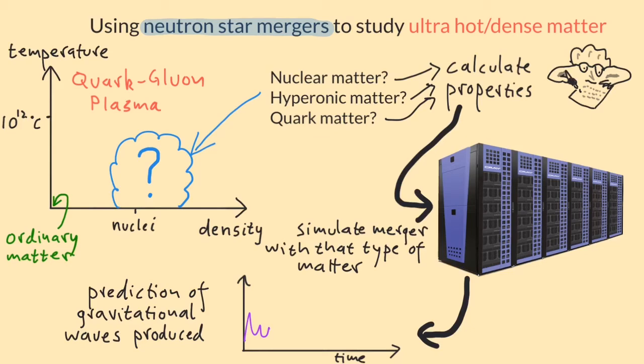If we do all that, assuming that the merger creates hot nuclear matter, and that disagrees with what they see, then matter at those temperatures and densities isn't nuclear matter, and we need to explore one of the other ideas like hyperonic matter. Calculate its properties, do a simulation assuming that's what's created in the merger, and compare to observations.